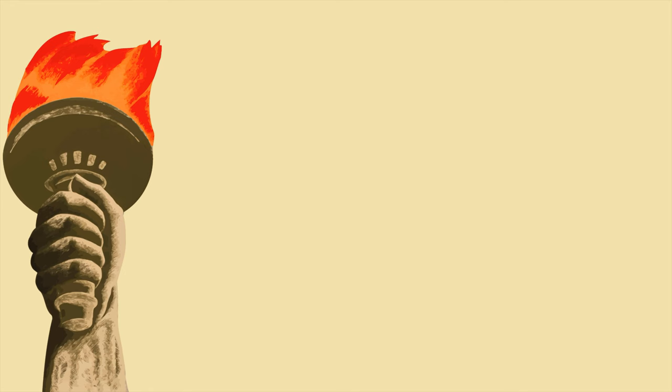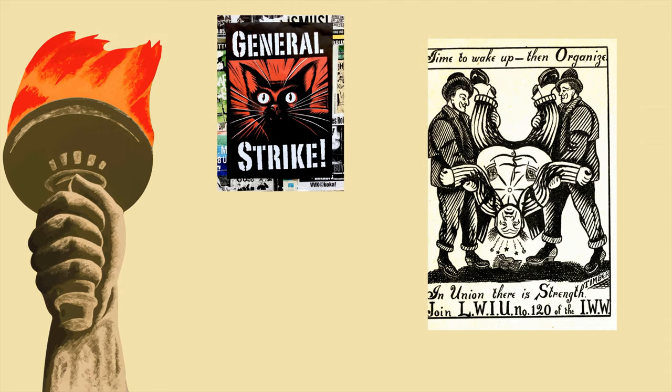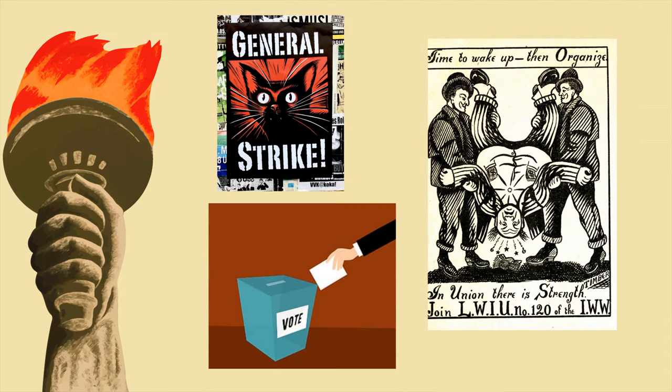Finally, democratic socialists pursue democracy in everything — democracy in the economy, democracy in the workplace, and democracy in politics. To a democratic socialist, we nominally have political democracy, but our workplaces are dictated by bosses and the economy is geared towards profits, not people. By expanding and improving democracy, we will create a better society.